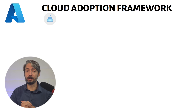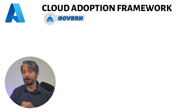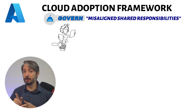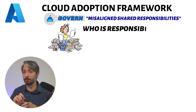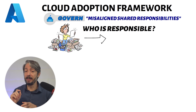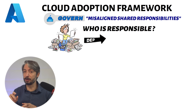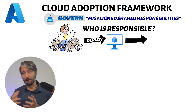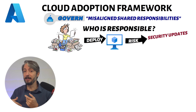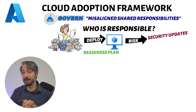This moves us into the Govern pillar with an anti-pattern called misaligned shared responsibilities. When you adopt the cloud, it may not be clear where responsibility lies with the cloud provider. For example, the HR department may deploy a virtual machine thinking that the cloud takes care of operating system updates — as we know, this is not the case and they may end up with a security risk. This can be avoided with a readiness plan and a RACI table.